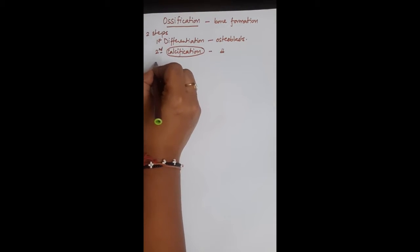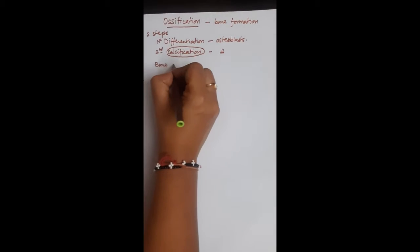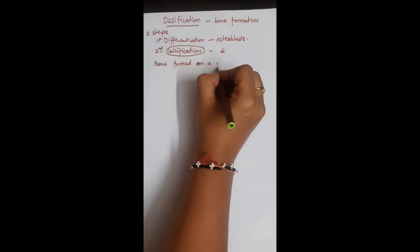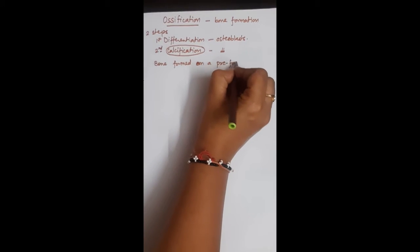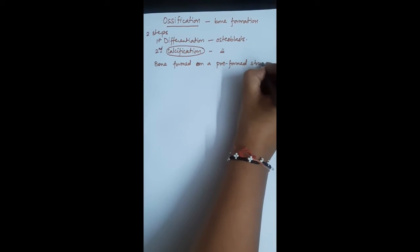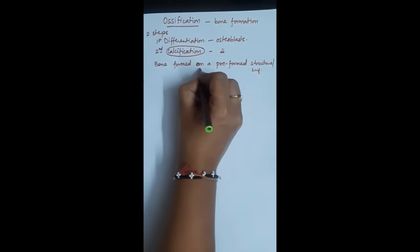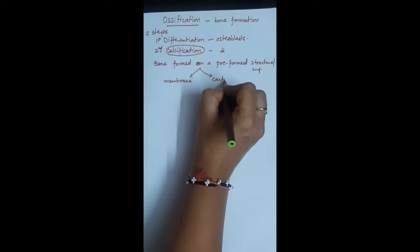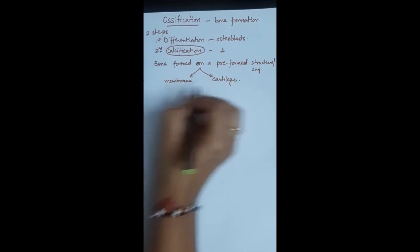Bone tissue is always formed on a pre-formed structure or surface. Depending on whether this surface is a membrane or cartilage, ossification is divided into two types.